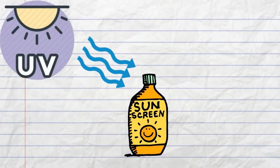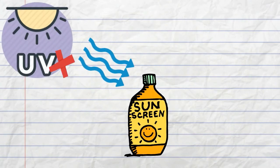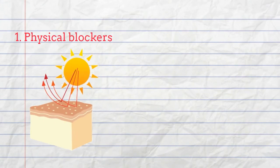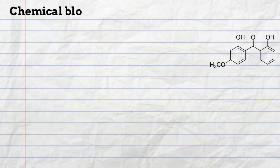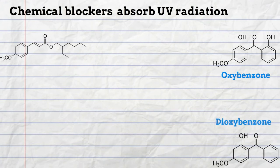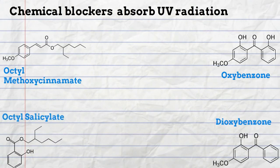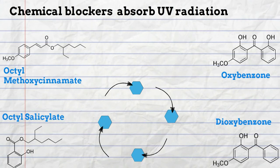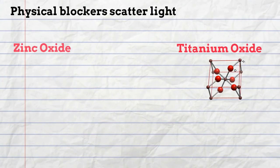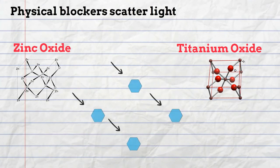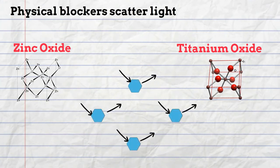Sunscreen protects against UV damage in two ways: by physically blocking the UV radiation, and through chemicals that absorb it. The chemical blockers are organic compounds that work by absorbing the energy of UV radiation before it damages the skin. The physical blockers are inorganic compounds that work by reflecting the UV radiation away from the skin.